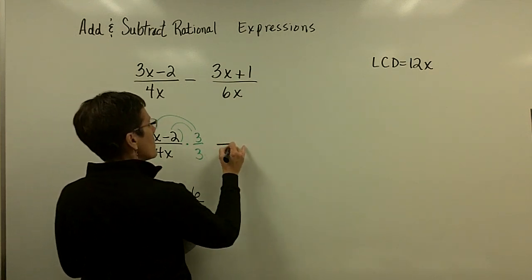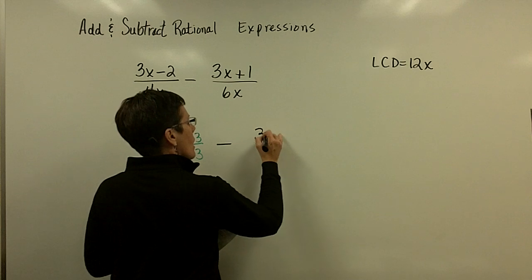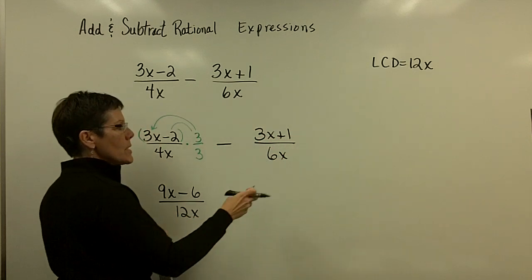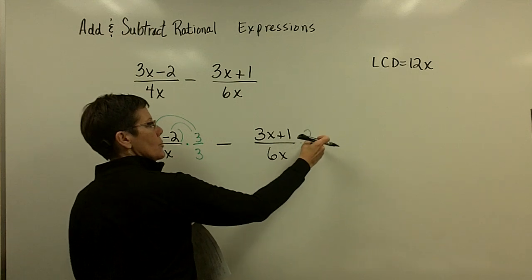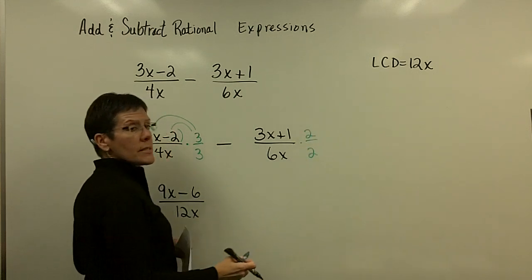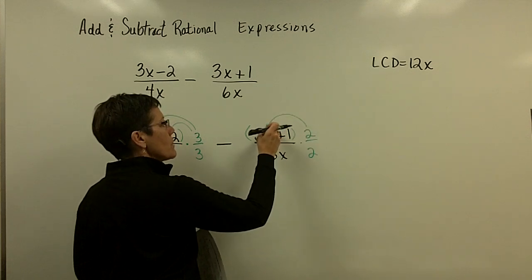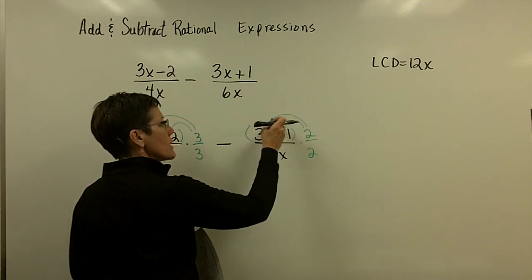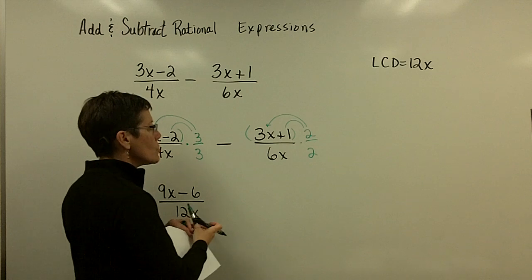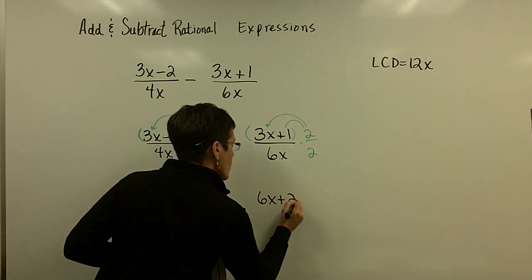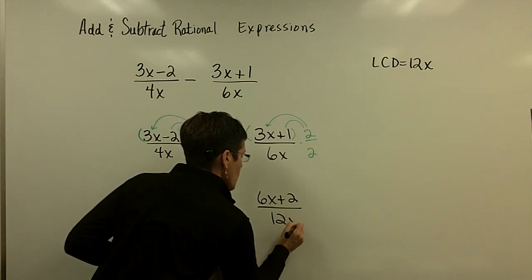And then, this is a subtraction problem, but I'm not going to pay attention to that. The 3x+1 has a 6x in the denominator, so it officially needs a 2 to make the denominator become a 12x. So, the 2 has got to be multiplied by the 3x and the 1. So, let's see, that would be a 6x+2. Is that right? 6x+2 over that common denominator of 12x.